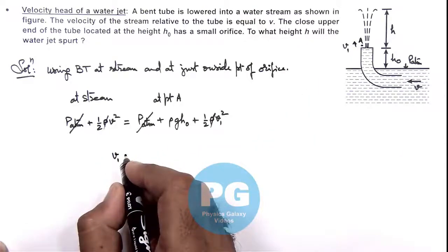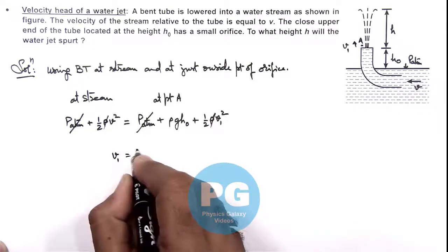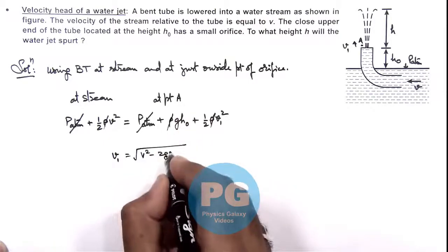root of v square minus 2g h_not. Here rho I have cancelled out and if we have got the value of v_1.